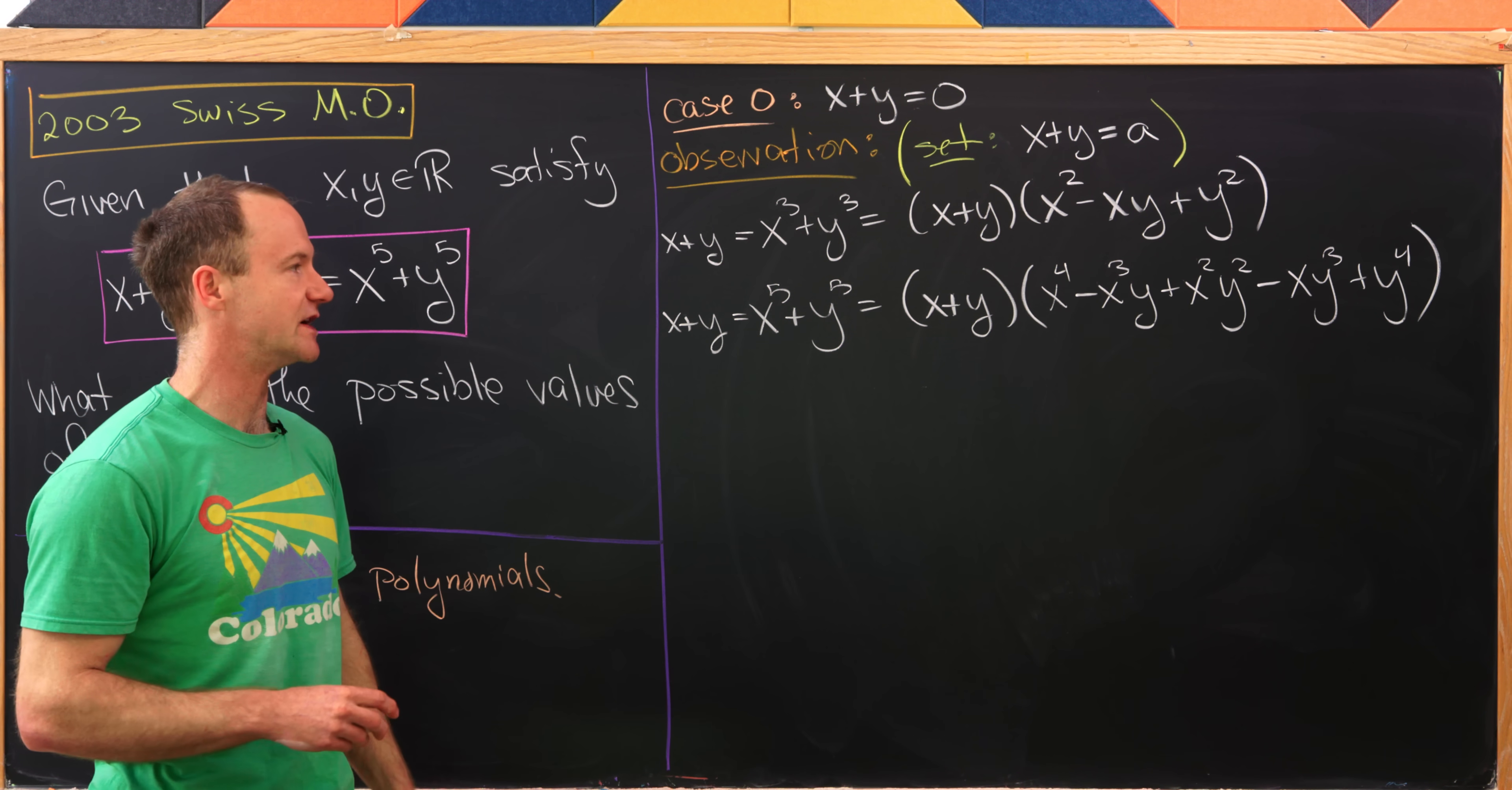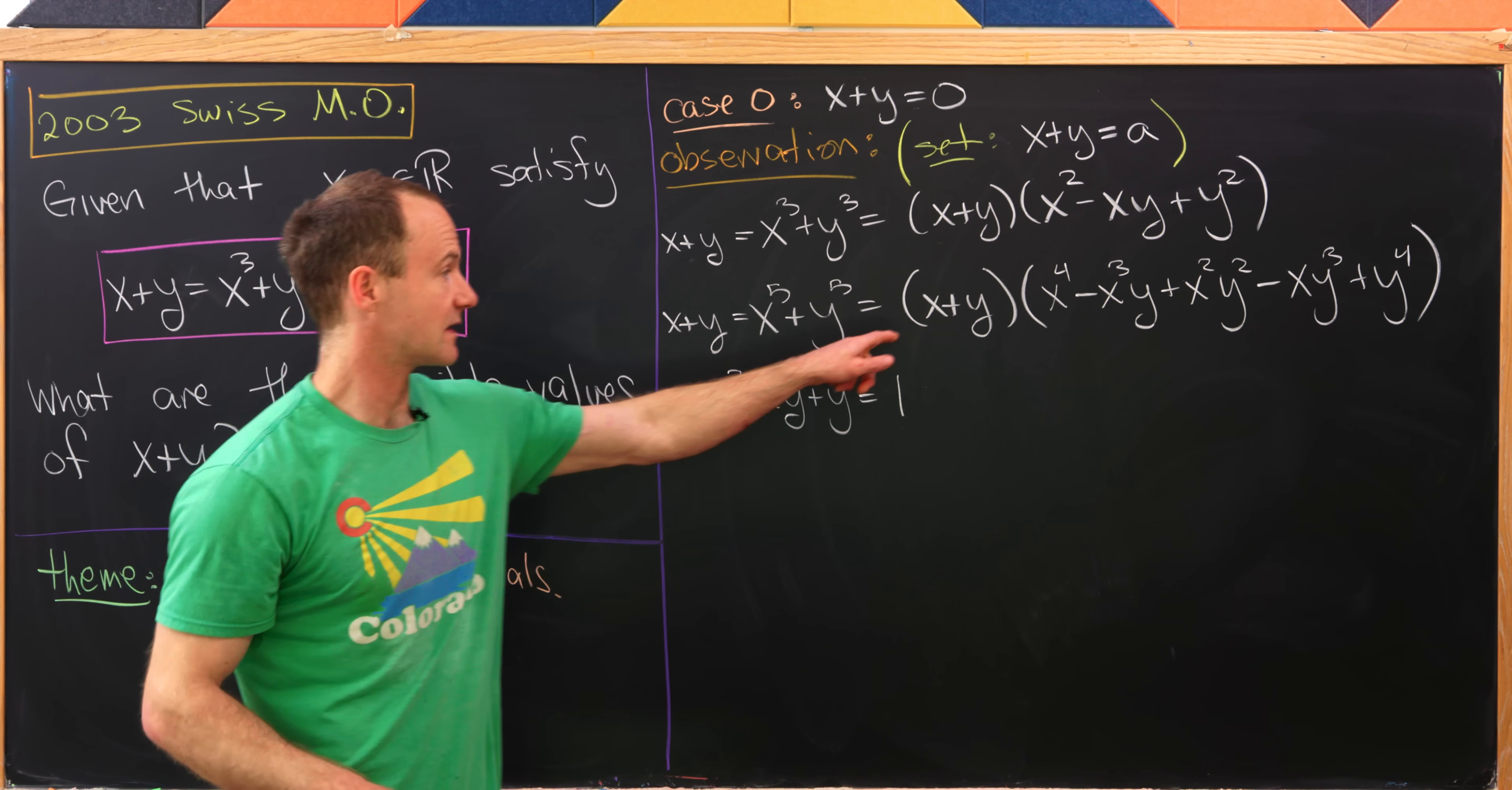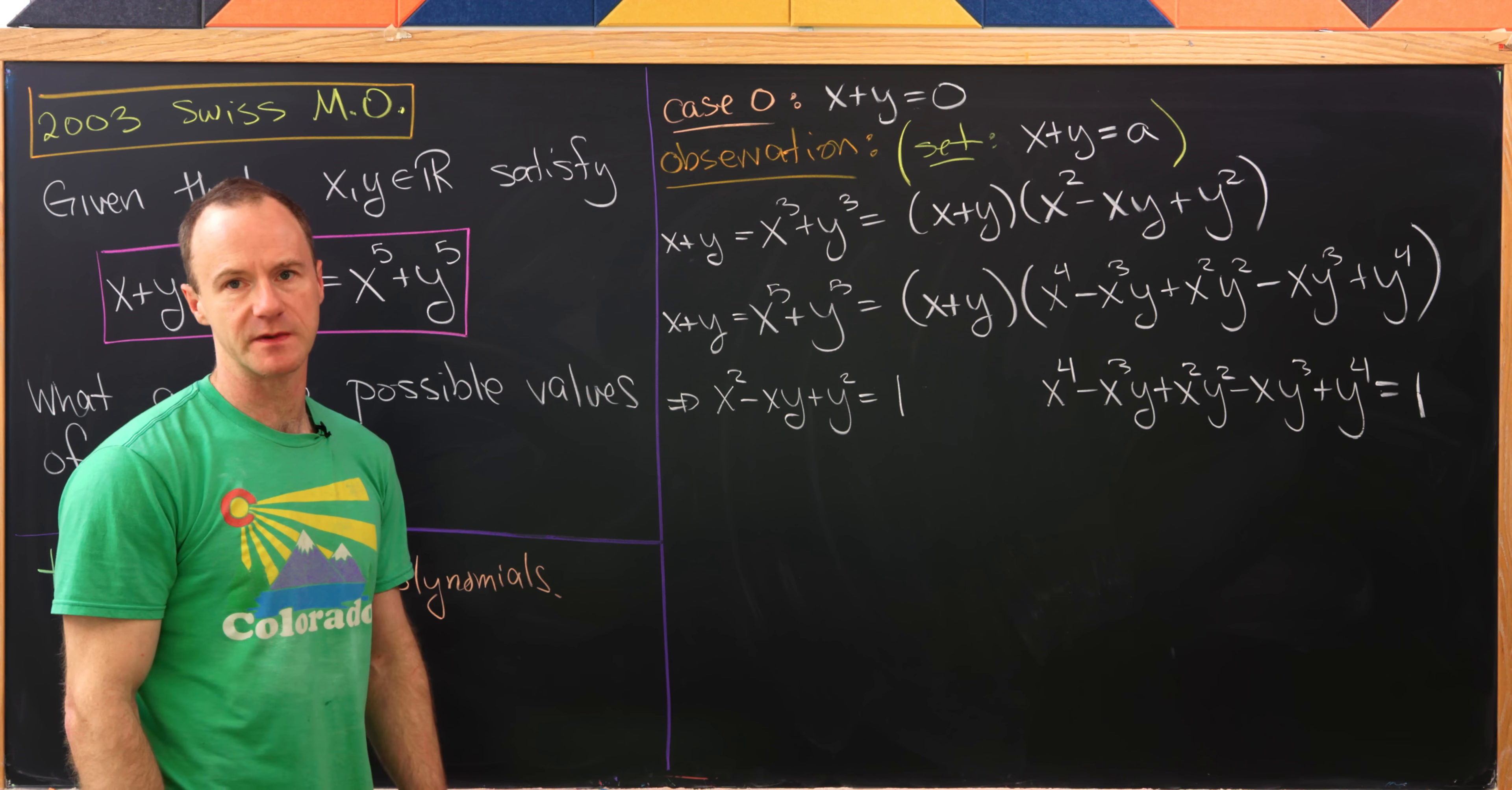Now back to our two equations. Let's take this first equation. Since x plus y is not equal to zero now, we can cancel it from both sides, leaving us with x squared minus xy plus y squared equals one. And then we can likewise do this to the other equation as well, leaving us with x to the fourth minus x cubed y plus x squared y squared minus xy cubed plus y to the fourth is equal to one.